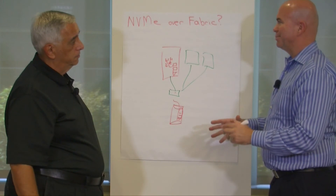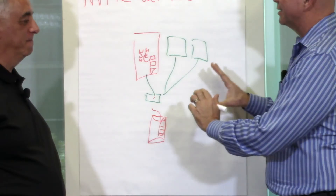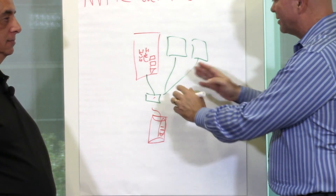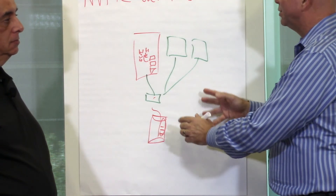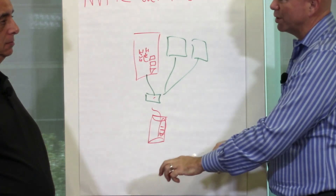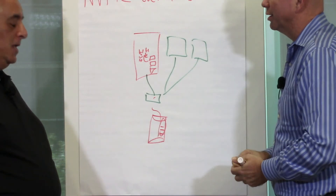Now if I'm a busy IT professional I might be thinking: oh no, not again — I don't want to change everything. So what's the impact? If I'm a Fiber Channel customer and I want to go to NVMe over fabric, do I have to rip all my switches out and start all over again?